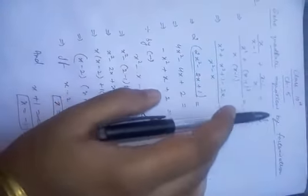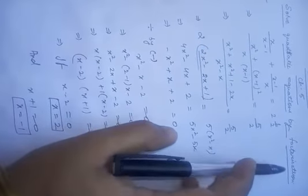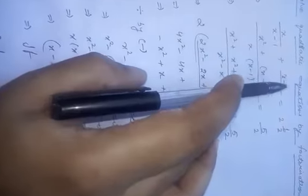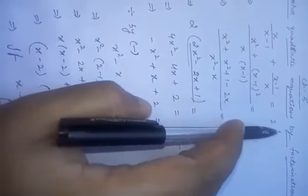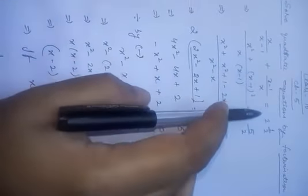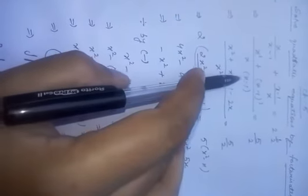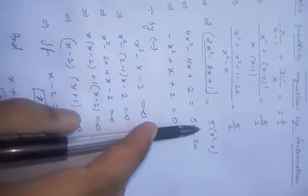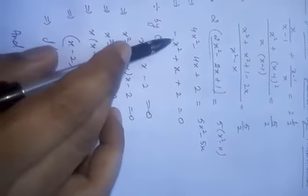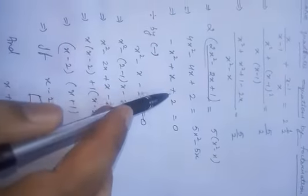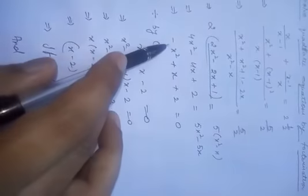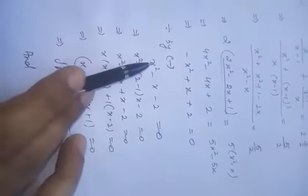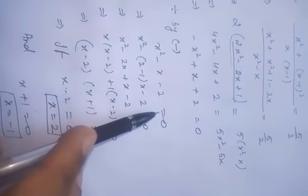The next topic is solving the quadratic equation by the factorization method. The example given is x/(x-1) + (x-1)/x = 2½. For this type of question, take the LCM and solve it using cross multiplication. The final equation becomes -x² + x + 2 = 0. Since there is a minus sign, divide the whole equation by minus, giving x² - x - 2 = 0.